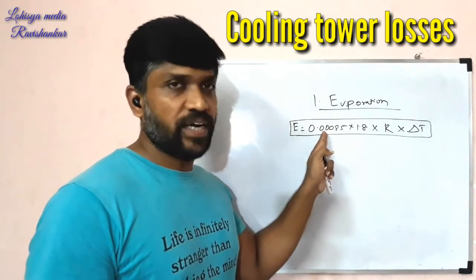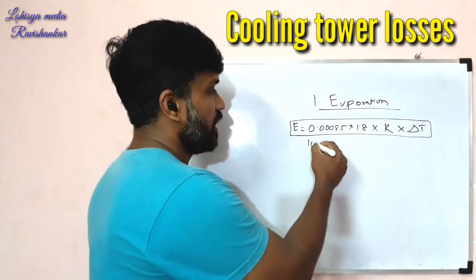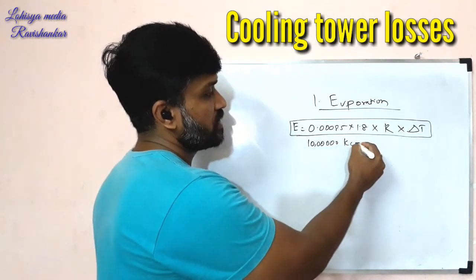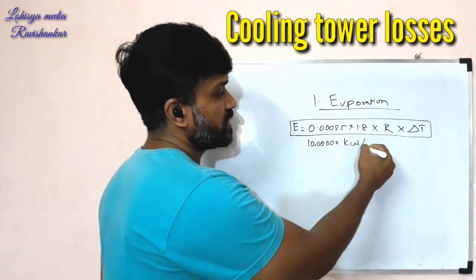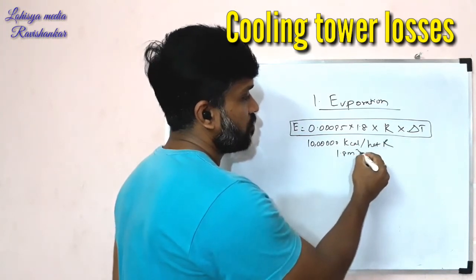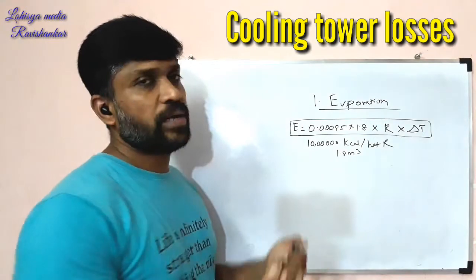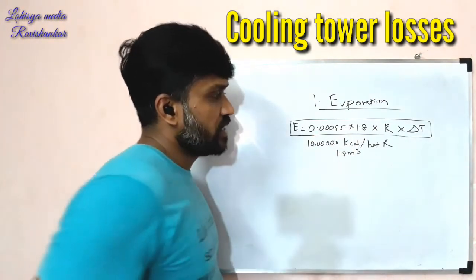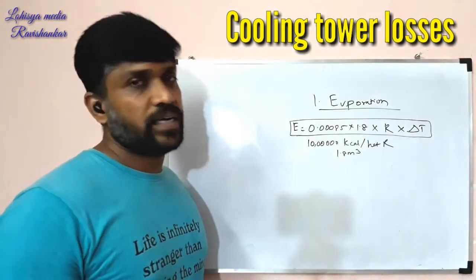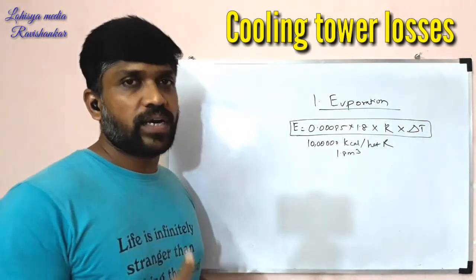This formula is directly for evaporation. Just give the correction factor: 1.8 — for every 10 lakh kilocalories of heat rejection, 1.8 m³ of water will be used in evaporation. Evaporation equals 10 lakh kilocalories heat rejection per 1.8 m³ of water evaporation loss.